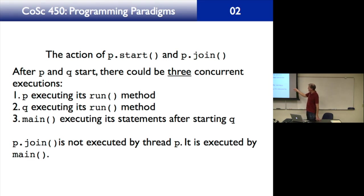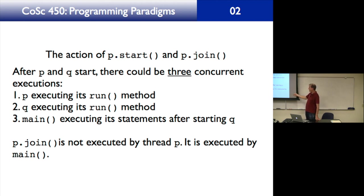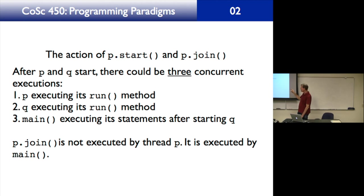After p and q start, there could be three concurrent executions: p executing its run method, q executing its run method, and main executing its statements after starting q. p.join is not executed by thread p — it is executed by main. That is a source of a lot of confusion. People program blindly and do not understand that. But that is precisely what happens.